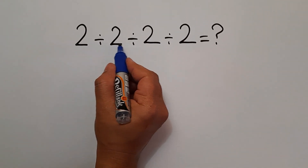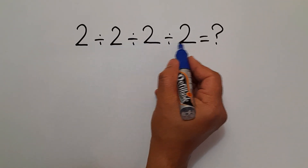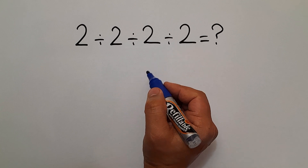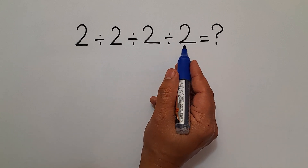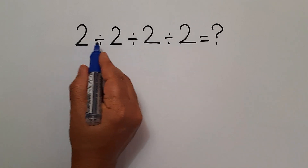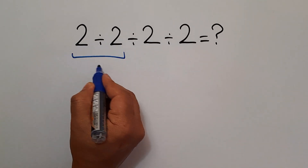2 divided by 2 divided by 2 divided by 2, and again divided by 2. Let's go ahead and get started. 2 divided by 2 equals 1.